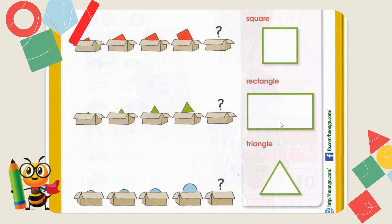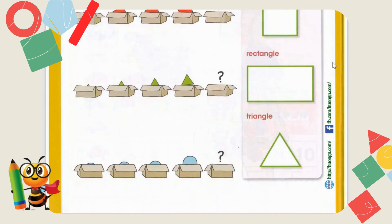How does a rectangle have two equal sides? The shorter side matches the other shorter side, and the longer side matches the other longer side. So there are two pairs of equal sides in a rectangle — one pair of long sides and one pair of short sides. A square has four equal sides, while a rectangle has two pairs of equal sides. That is the difference.